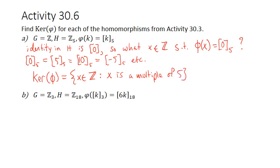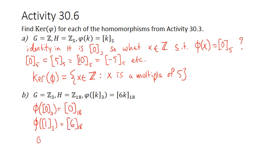For part B, G has only three elements, so we can check by hand. Phi of 0 mod 3 is 0, so that's in the kernel. Phi of 1 mod 3 is 6, so that's not in the kernel. Phi of 2 mod 3 is 12, so that's not in the kernel. So the kernel is just the set containing 0.